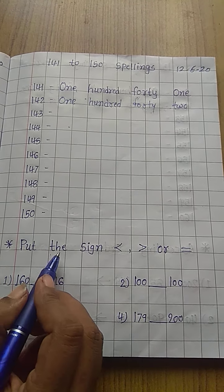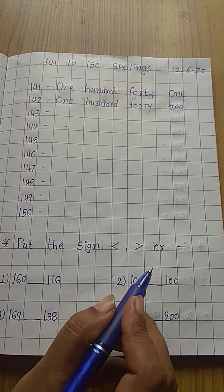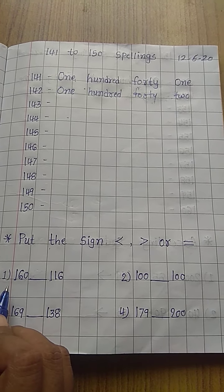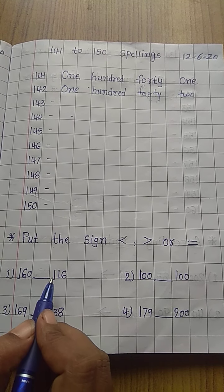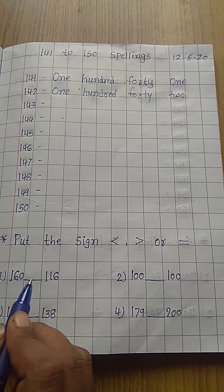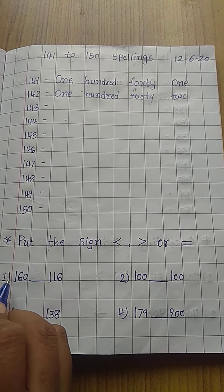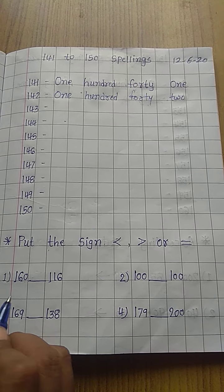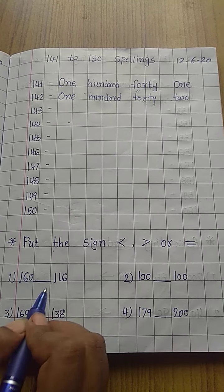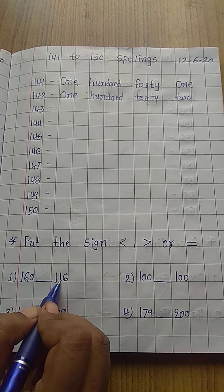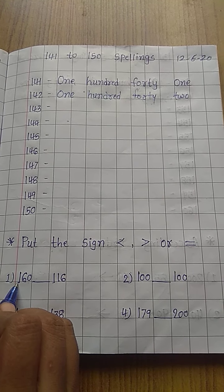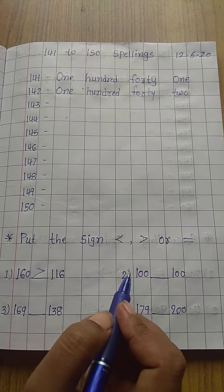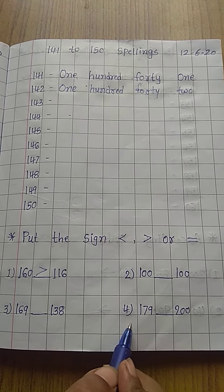Next exercise: put the sign — less than, greater than, or equal to. Here are two numbers: 160 and 116. First of all, look at the first digit: 1, 1, 1, 1 — both are the same. Then look at the second digit: 6 and 1. So 6 is greater than 1, meaning 160 is greater than 116. Now write numbers 2 to 4 in your notebook.